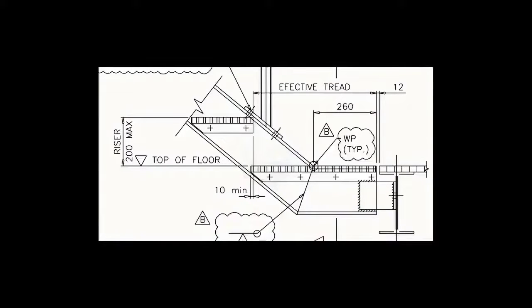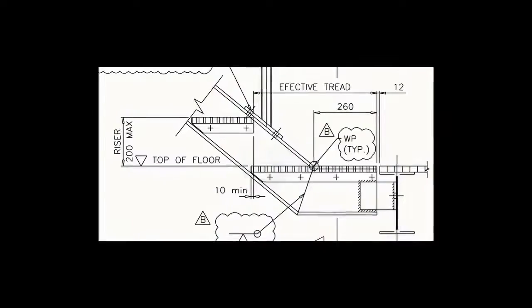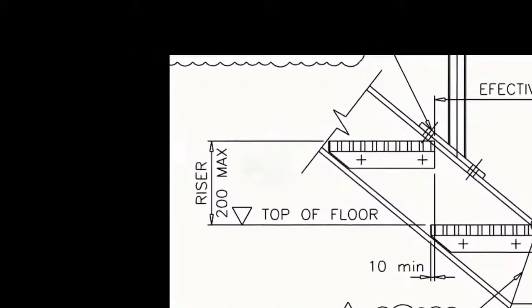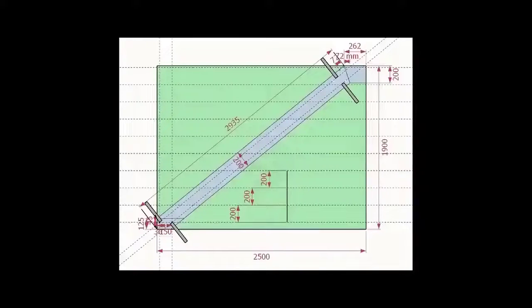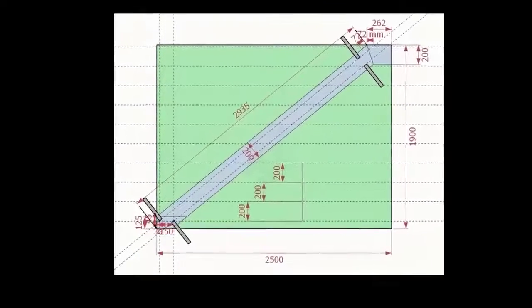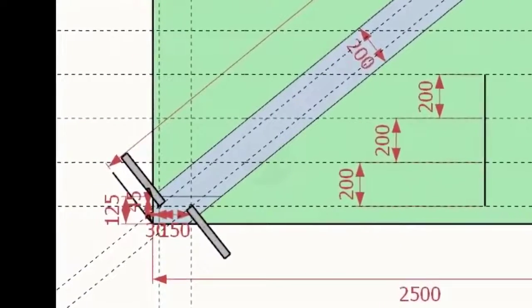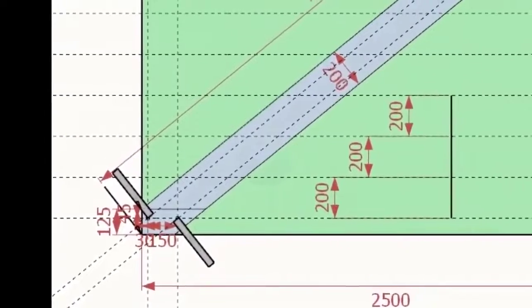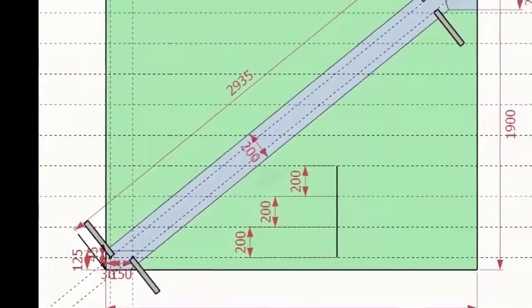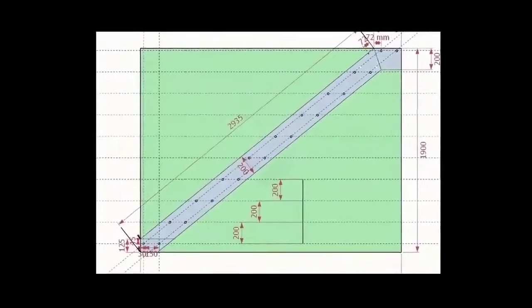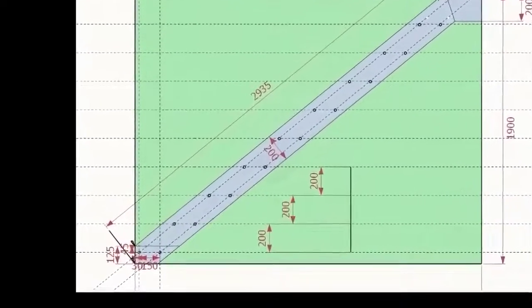As per the drawing, the raise between the two adjacent steps is 200 mm. Draw parallel lines of 200 mm pitch to the entire height of the stairway. Each intersection points are bolt hole centers.